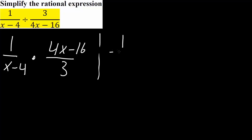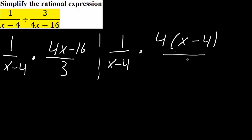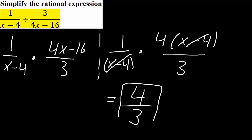So we get 1 divided by x minus 4, times 4(x minus 4) divided by 3. We notice that we have a common term — x minus 4 and x minus 4 — so we can simply cancel them. Our final answer, simplified, would be 4 divided by 3: simply 1 times 4 divided by 3. And this is the final answer to the first problem.